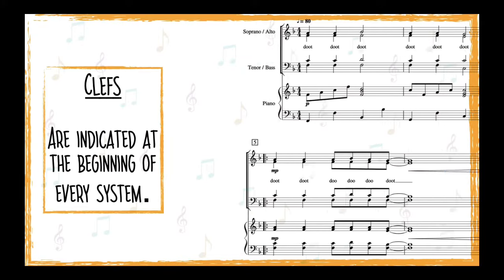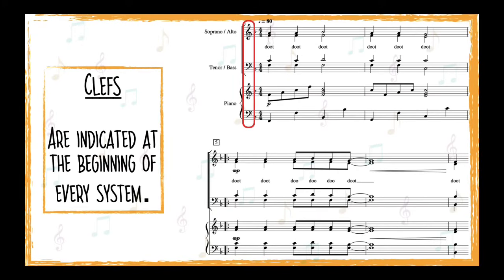Clefs are always indicated at the beginning of every system. In choral music, we use treble clef for soprano, alto, and tenor, and bass clef for bass and baritone.